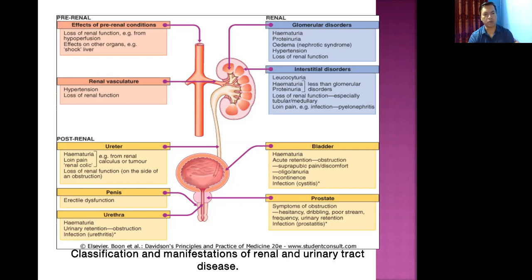If obstruction of the ureter is completely blocking urine flow, that side of the kidney may develop hydronephrosis and loss of renal function. Bladder disorders can result in hematuria, and if the neck of the urinary bladder is completely blocked, acute retention of urine is a common feature.